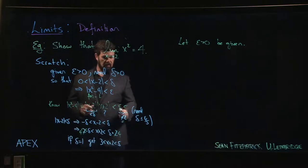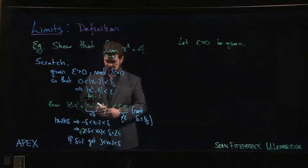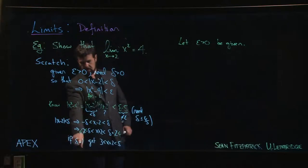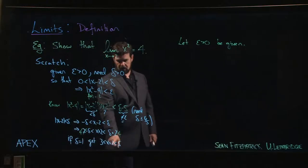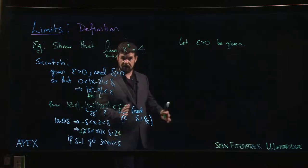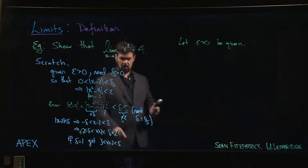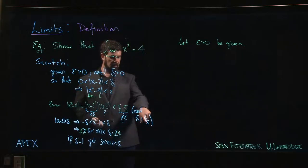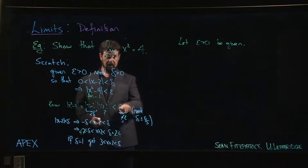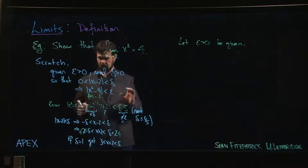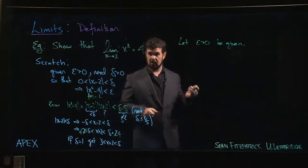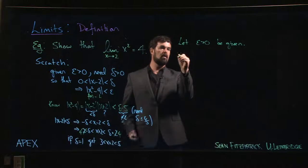So we notice that there are actually two things I need to know about delta. I need it to be no bigger than 1, because if delta were bigger than 1, then this x + 2 could get bigger than 5, and that would throw off this estimate. So delta has to be less than or equal to 1 to make sure that x + 2 is smaller than 5. On the other hand, it has to be less than or equal to epsilon over 5 in order to make this part work. So if we want to make sure that delta is less than or equal to both of those things, what we do is we take it to be the smaller of the 2.